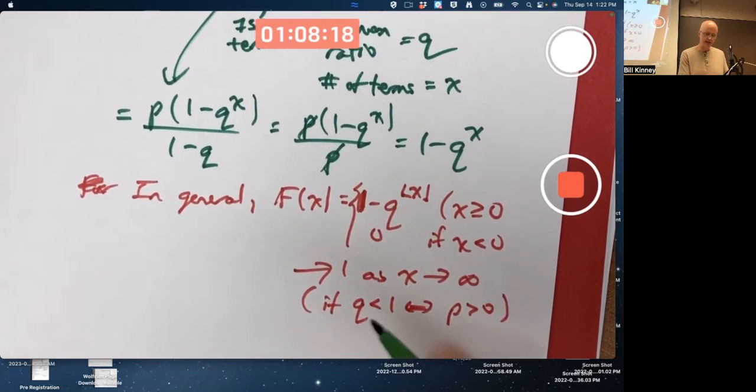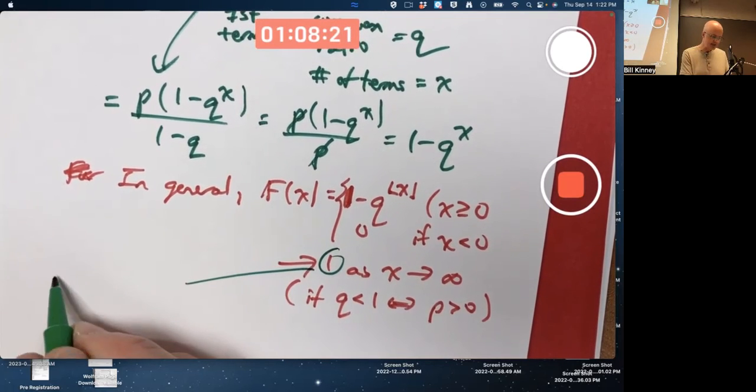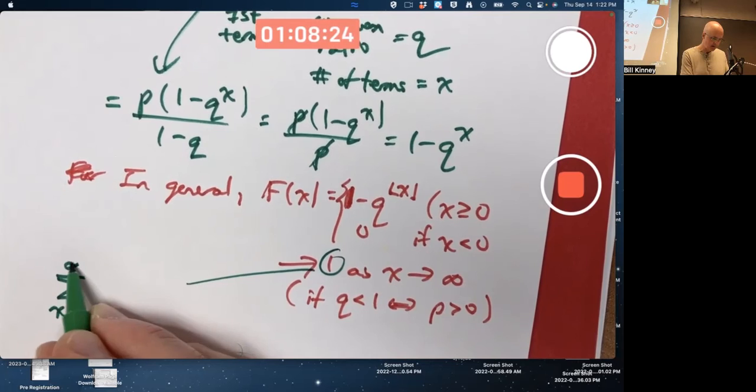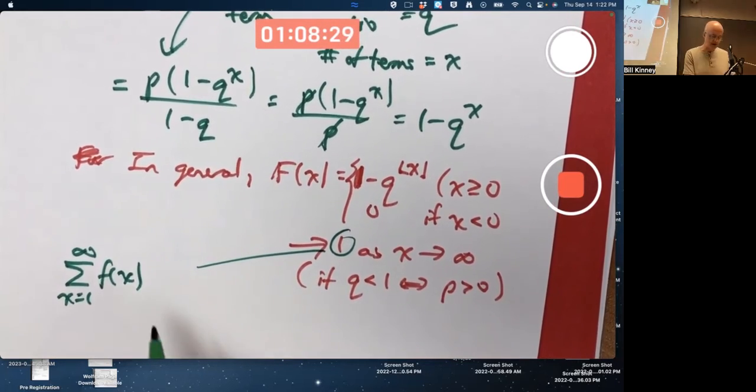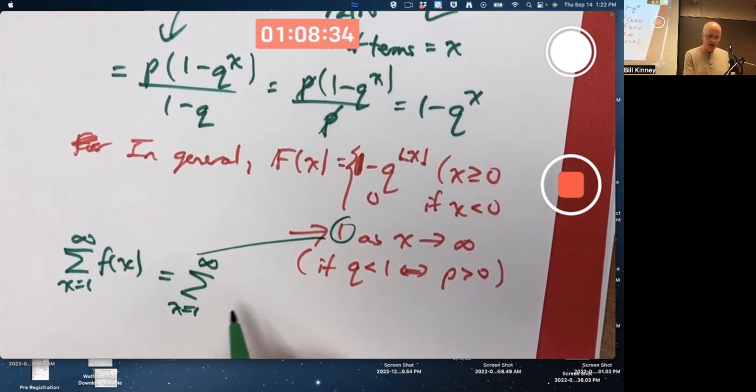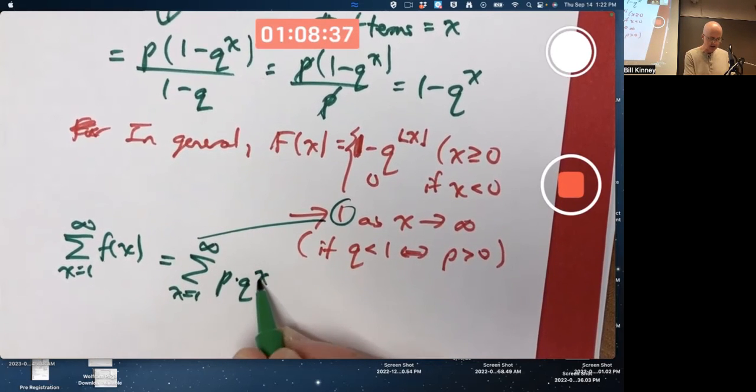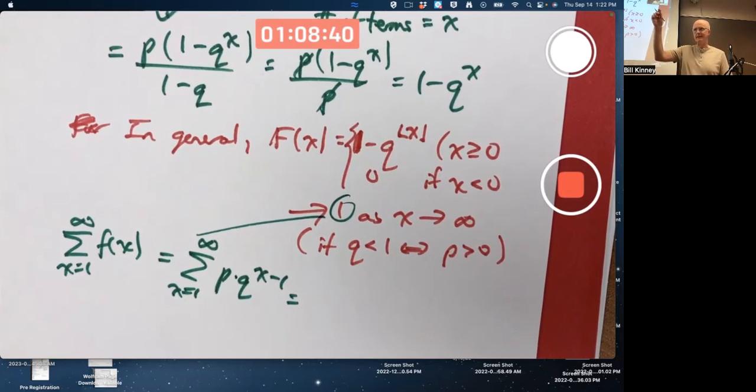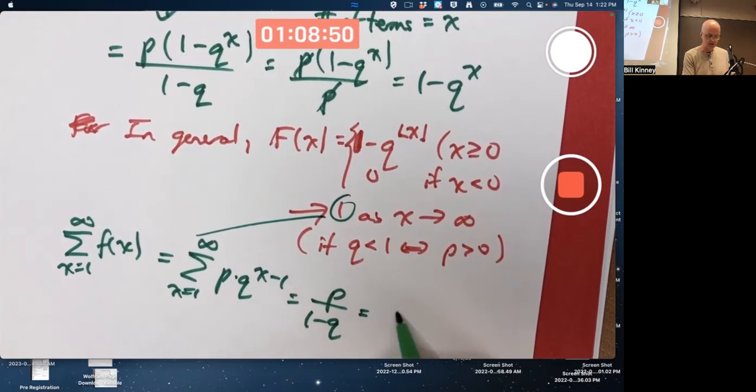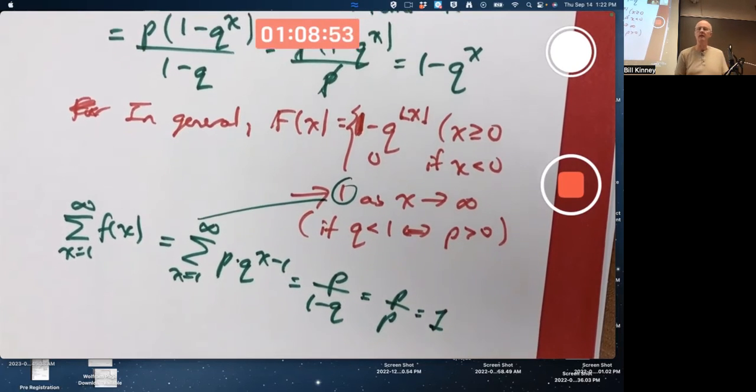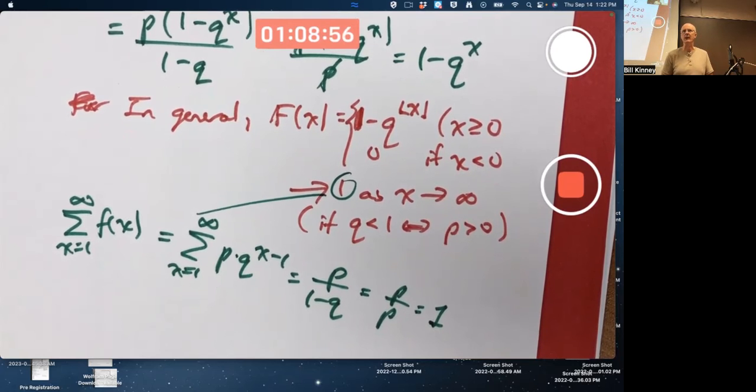It's enough to say that this one is the infinite sum of the little f of X values. If you wanted extra confirmation, you could use the formula for the sum of an infinite geometric series. In Calc 2, you're writing it as typically A over one minus R - first term divided by one minus the common ratio. This would be P over one minus Q, which is P over P, is one. That would be another confirmation of that.